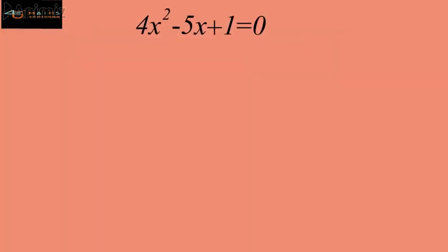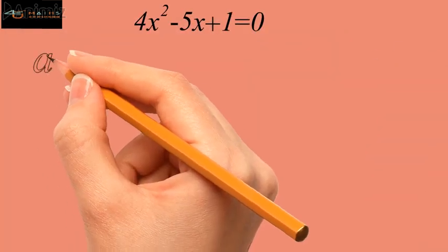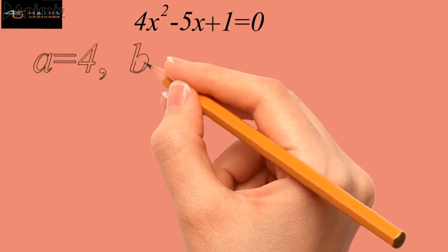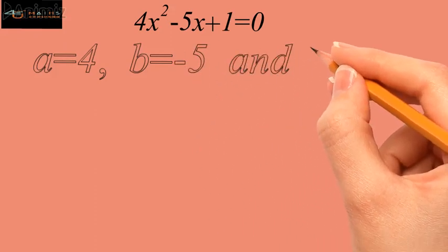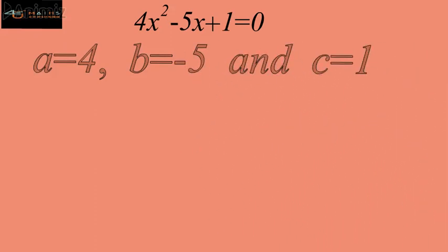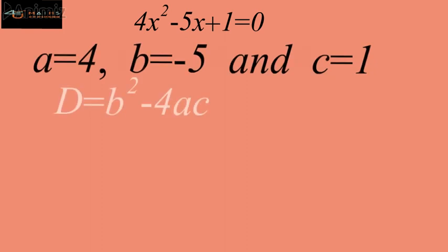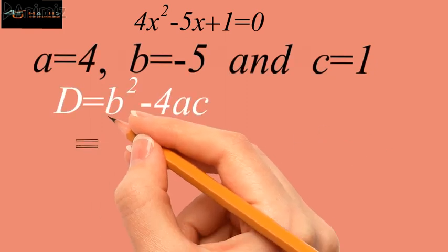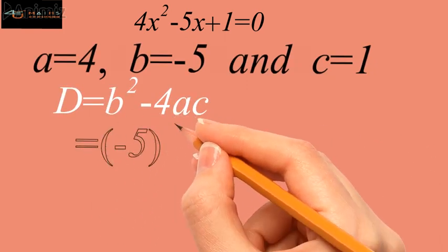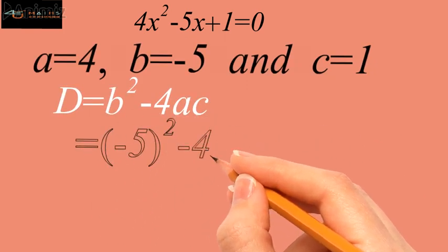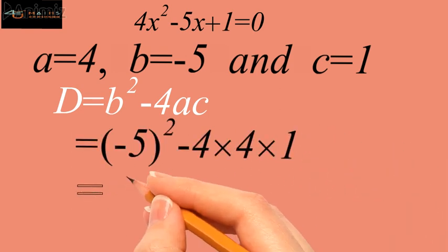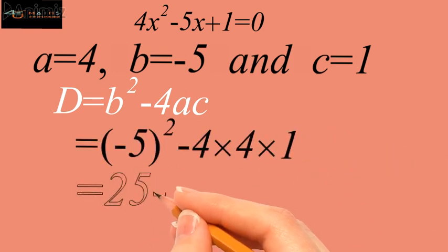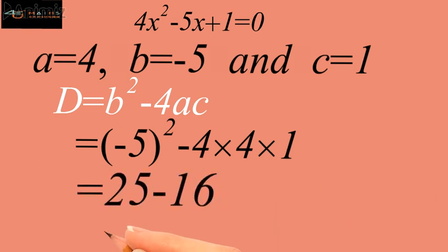The second part is 4x squared minus 5x plus 1 equals 0. Here, a equals 4, b equals minus 5, and c equals 1. So d equals (−5)² minus 4 times 4 times 1, which gives 25 minus 16, and further simplifies to 9.